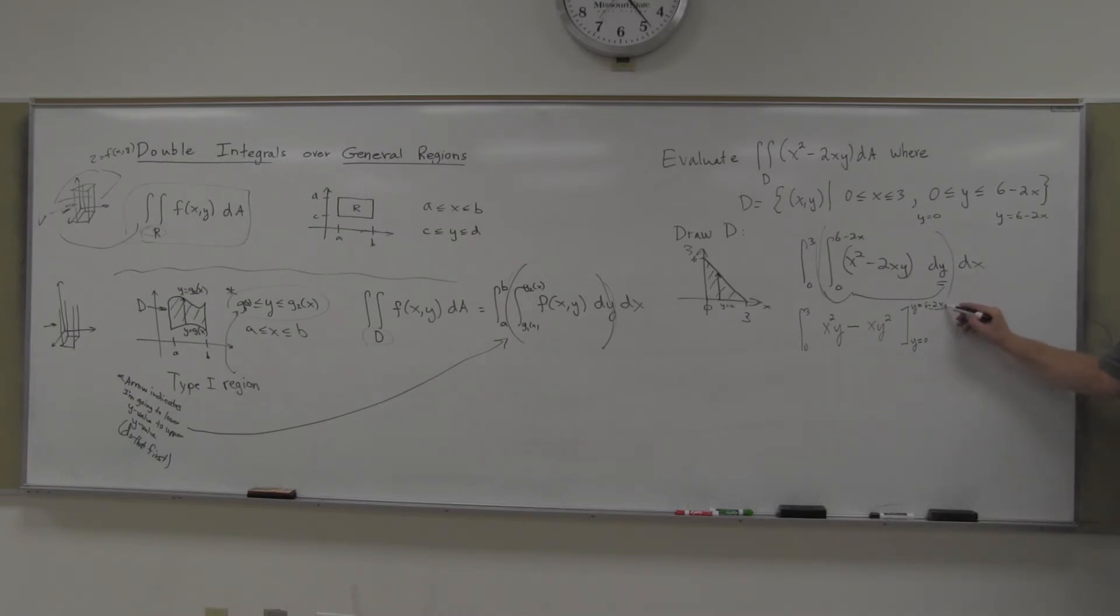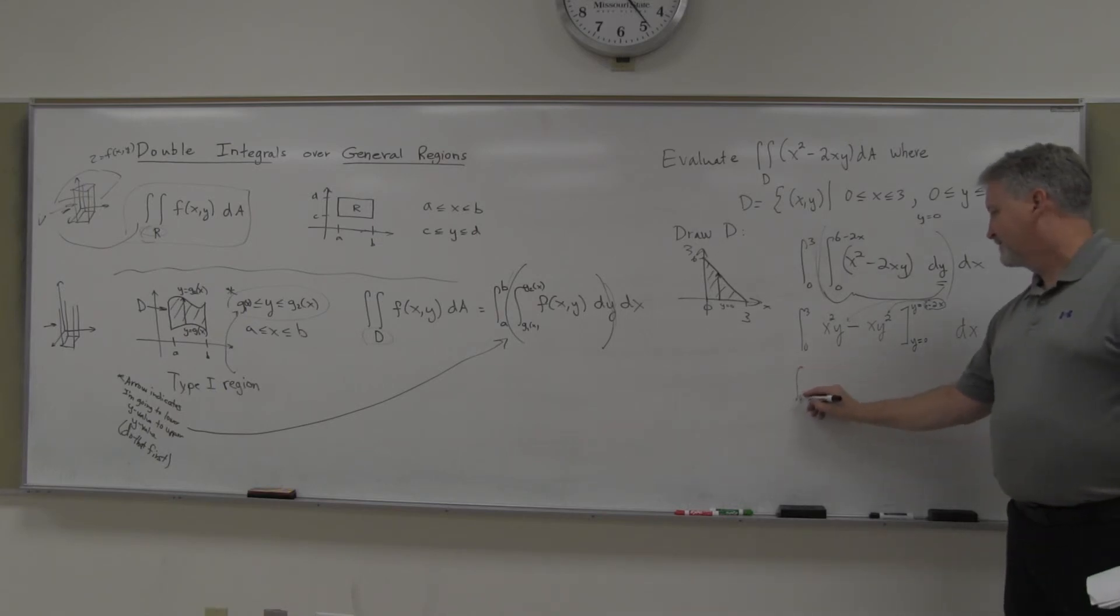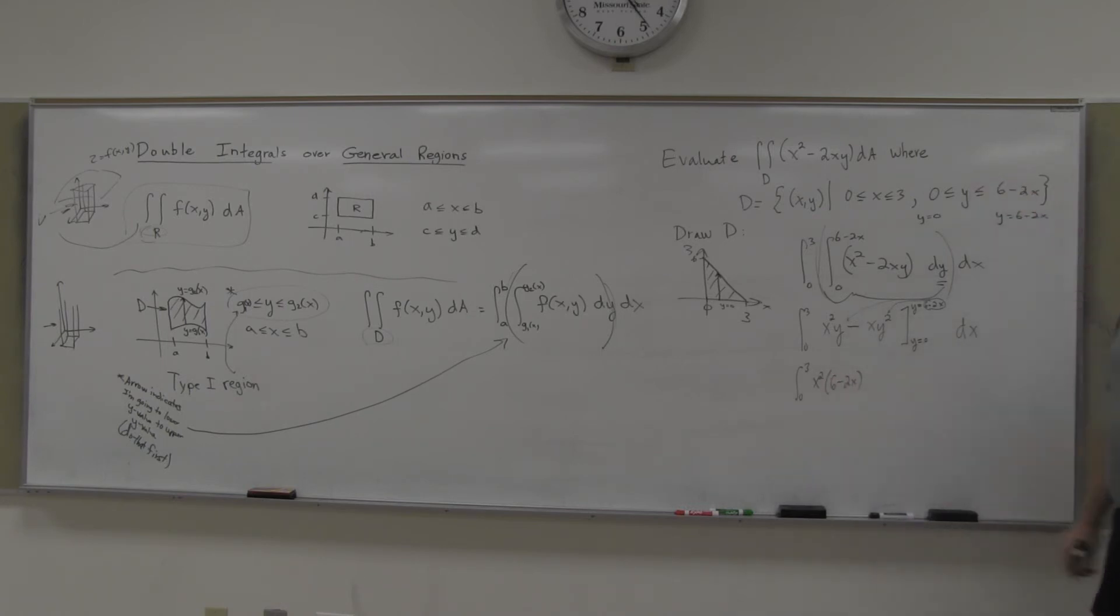So yeah, these, so I'm going to plug in the upper one first for the Y, and you can get pretty long pretty quickly there, but this one's not too bad, it would be X squared minus, sorry, X squared times 6 minus 2X, minus X times, and then 6 minus 2X squared. Now, the good news on this one is, when I plug in Y to be 0, I get 0s, that won't necessarily always happen, but in this particular case, it does.